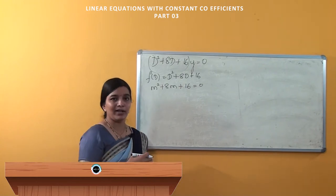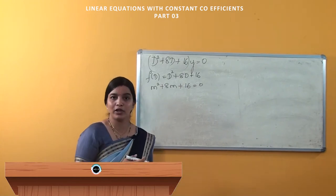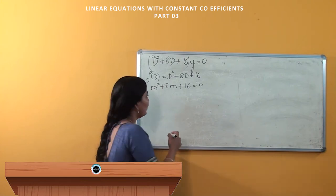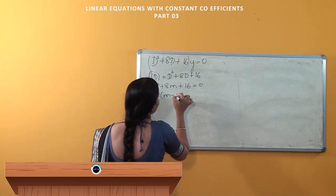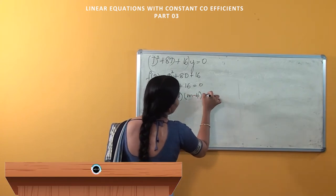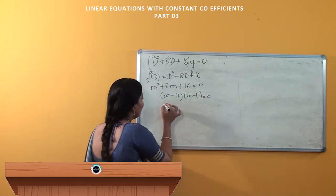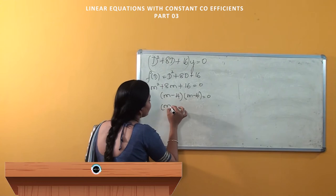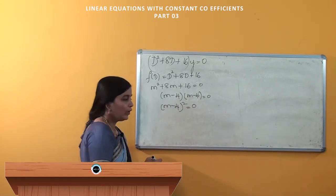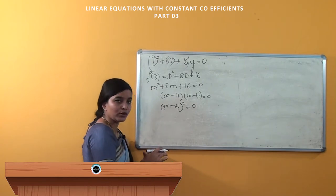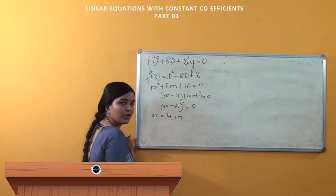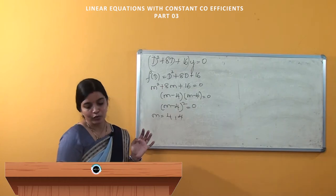It is a quadratic equation, so we can solve it. On solving, we get (m - 4)(m - 4) = 0, that is (m - 4)² = 0. So here we get two roots: one is m = 4, and the other one is also m = 4 itself.